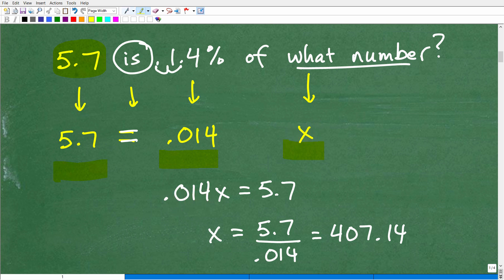5.7 is equal to 0.014 of some number x. This is a better way to look at it. If I knew what this number was, I would say 1.4%, I would multiply it. I would change this to a decimal, which would be 0.014, and then I would multiply by that number. I don't know what that number is, so that's going to be x. But I know the answer is going to be 5.7. So look at it this way: 0.014 times some number x is going to be equal to 5.7.